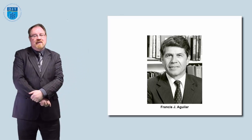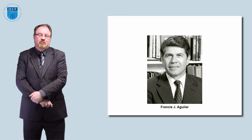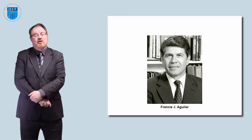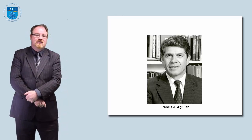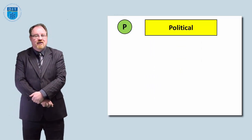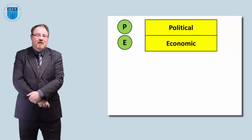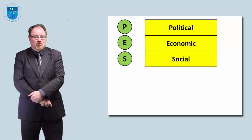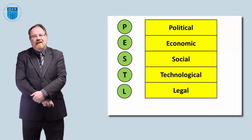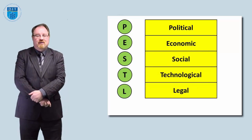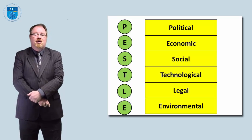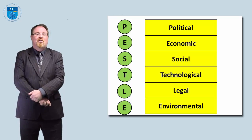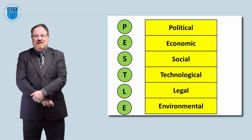PESTEL is an acronym — or more correctly, an initialization — and P-E-S-T-E-L stands for Political, Economic, Social, Technical, Legal, and Environmental. There were earlier versions of PESTEL called PEST, SLEPT, PESTE, or things like that.